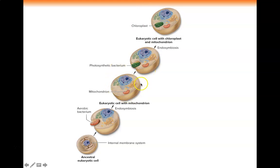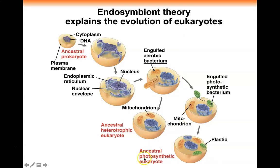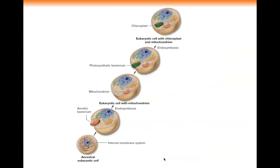Some of these cells will end up engulfing a photosynthetic bacterium, which establishes itself as a chloroplast. So one endosymbiosis event gives rise to heterotrophs that do not do photosynthesis, and another gives rise to phototrophs — or phototrophic organisms — that do photosynthesis using sunlight.